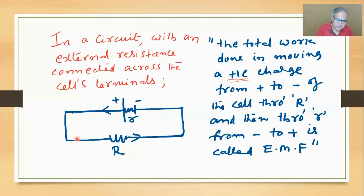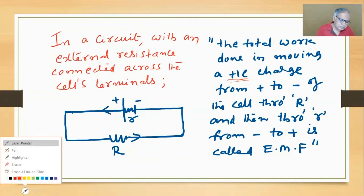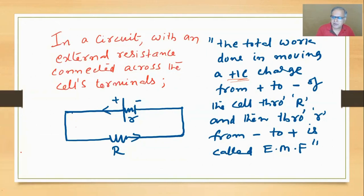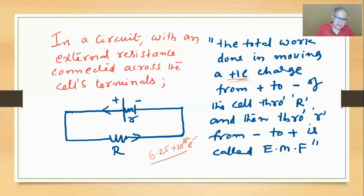When current is not flowing and EMF is measured - the potential difference found - it is inactive. The moment you connect a resistance outside and current flows, it starts working: it works in capital R (the external circuit) and in small r (the internal resistance). The total work done per one coulomb is EMF. When current is flowing you cannot measure it exactly because it is spending something in capital R and something in small r.